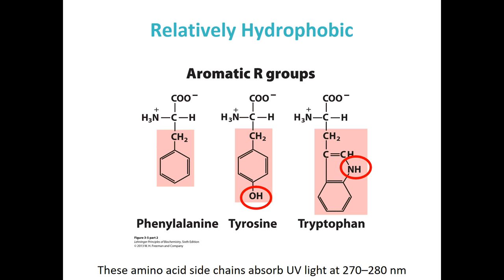Our next group is the aromatic R groups — relatively hydrophobic, though tyrosine and tryptophan do have areas capable of hydrogen bonding. What's interesting about these aromatic amino acids is that they have a side chain capable of absorbing ultraviolet light, which is used when we're trying to detect proteins in experimental studies. Phenylalanine is the simplest aromatic with a methyl group and an aromatic ring. Tyrosine is phenylalanine plus a hydroxyl group. Tryptophan is a really large amino acid capable of some hydrogen bonding, but its large hydrophobic region makes it almost act as an amphipathic molecule when incorporated into proteins.